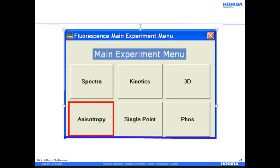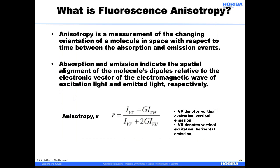Next, we will talk about fluorescence anisotropy. Fluorescence anisotropy is a measurement of the changing orientation of a molecule in space with respect to time between the absorption and emission events. Absorption and emission indicate the spatial alignment of the molecule's dipoles relative to the electronic vector of the electromagnetic wave of excitation and emitted light, respectively. Basically, if we excite our fluorophore with vertically polarized light, the emitted light will retain some of the polarization based on how fast it's rotating in solution. The faster the reorientational motion, the more depolarized the emitted light will be. The slower the motion, the more the emitted light will retain the polarization.